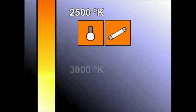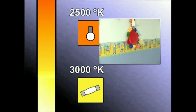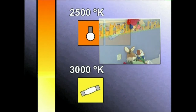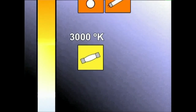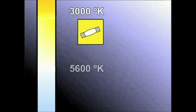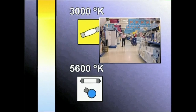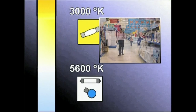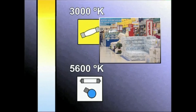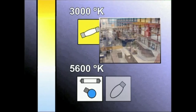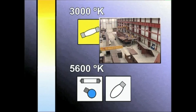3.000 gradu kelvinek kolore temperaturak kolore horia ematen du. Lampara halogenoen argiek ematen dute kolore temperatura hori. Argi zuriaren kolore temperatura 4.000 eta 6.000 gradu kelvinekoa da. Argi iturri artifizial artean kolore temperatura hori dutenak dira, besteak beste, eguneko argia ematen duten lampara fluorezenteak eta merkuriozko lurruneko lamparak.